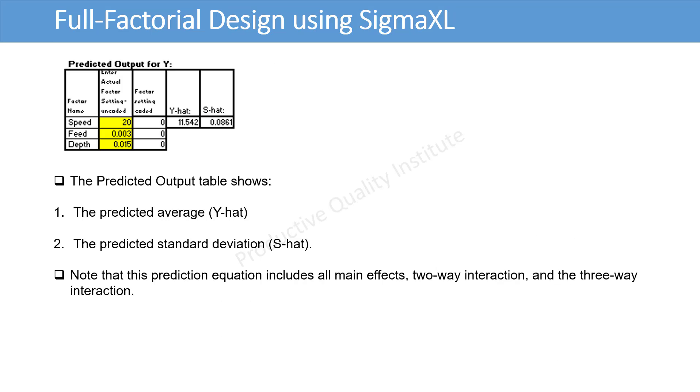The predicted output table shows 1. The predicted average Y-hat. 2. The predicted standard deviation S-hat. Note that this prediction equation includes all main effects, two-way interaction, and the three-way interaction.